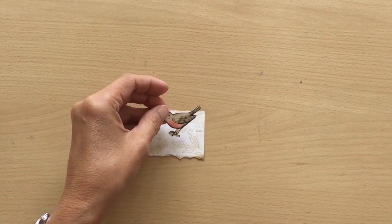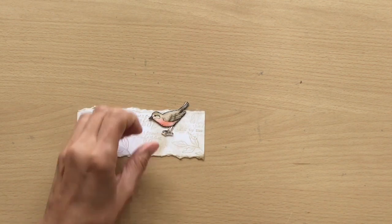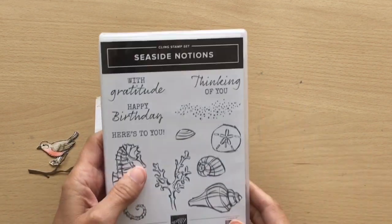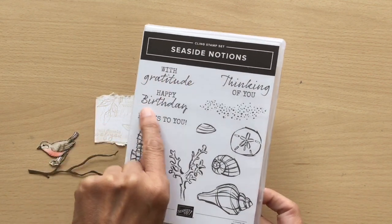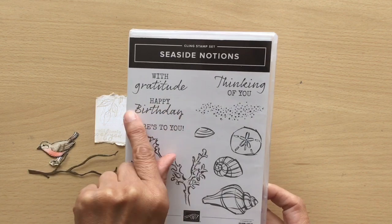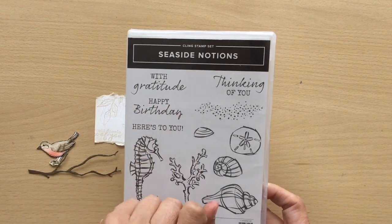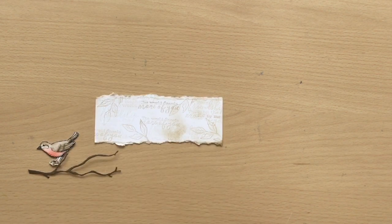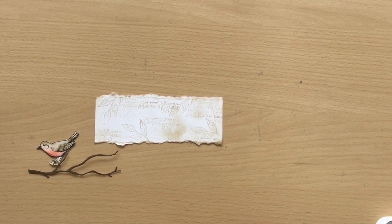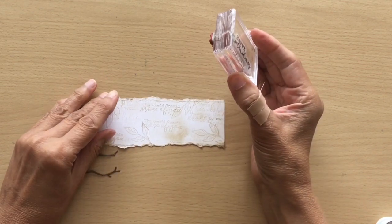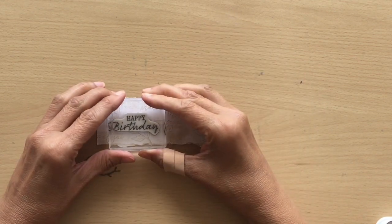And I'm going to start putting this together now. I'm bringing in Seaside Notions, I'm using the happy birthday. I'm going to be using this a lot if you see my videos because it's one of my favorite happy birthday stamps. I really like the font. I'm using the Memento Tuxedo Black ink. I'm going to put my happy birthday over here.